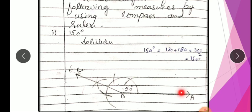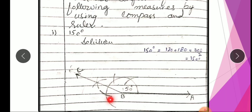Us ke liye sabse pehle ek ray draw karna hai — A, B. Ek ray draw karna hai. Aap ne apni compass leni hai. Compass aapne kitni open karni hai? Yeh jo A, B ray hai, us ke half se kuch open karna hai. Aapna compass lena hai aur ek semicircle draw karna hai. Construction karne ke liye, angle construct karne ke liye, humne yahan pe ek semicircle draw karna hai. Aapka jo center hai woh ye point hoga — jahaan se aapka semicircle shuru hoga, ye point aapka center hoga.